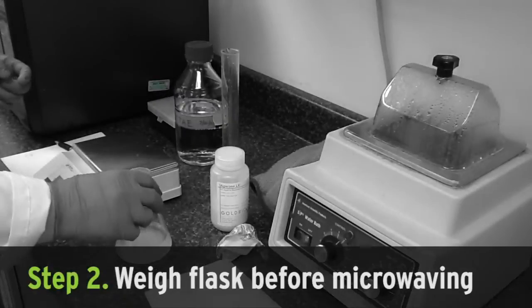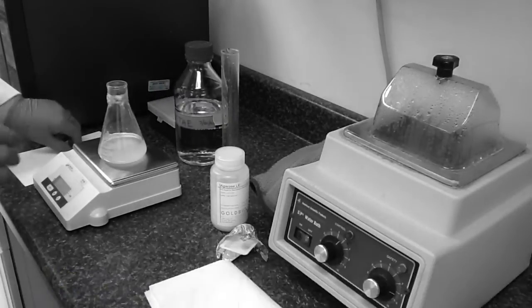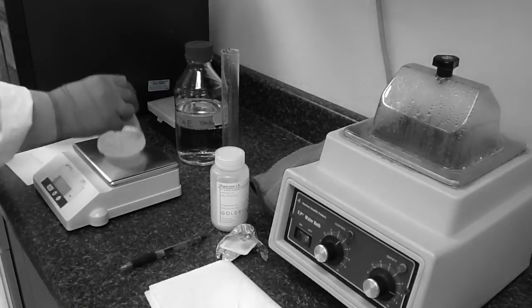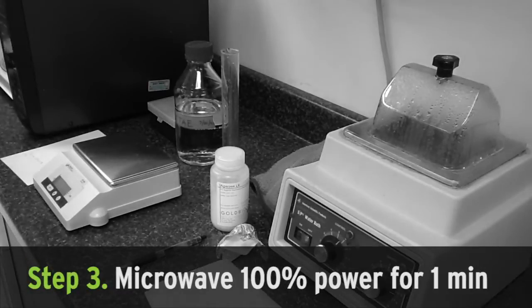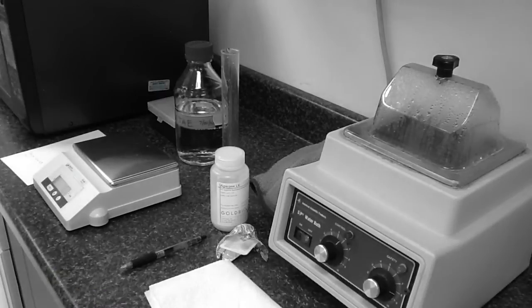Before microwaving, you'll want to weigh your flask and write down the starting weight. Next, microwave on 100% power for one minute. You'll want to watch it closely to make sure it doesn't boil over.